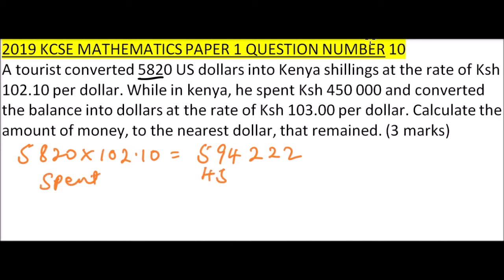While in Kenya, he spent 450,000 Kenya shillings. So this means that by the time he was to leave, he had a balance of 144,222 Kenya shillings.